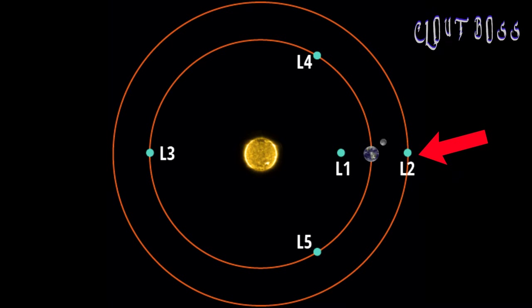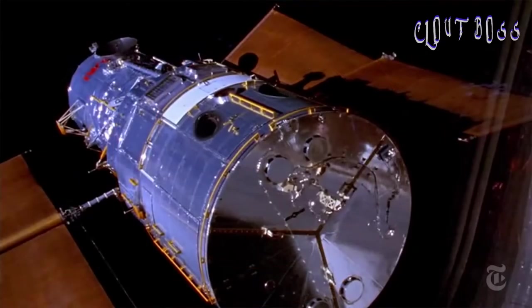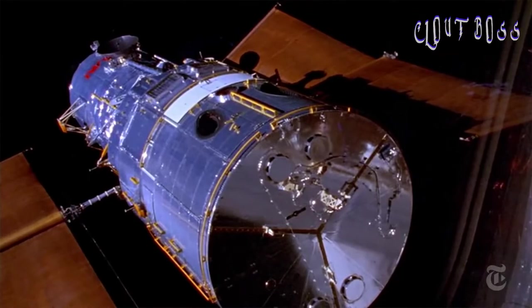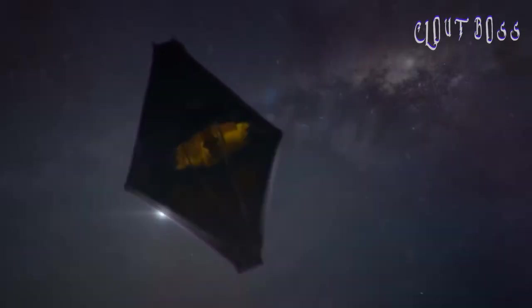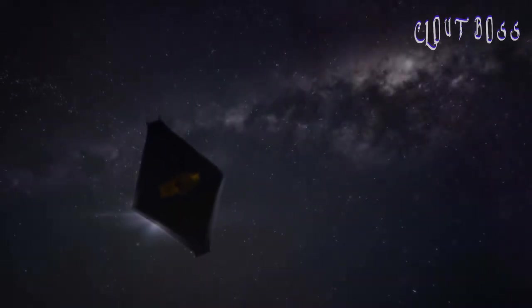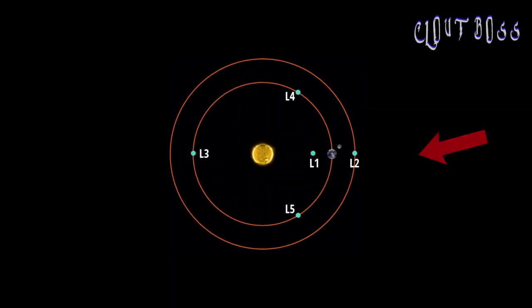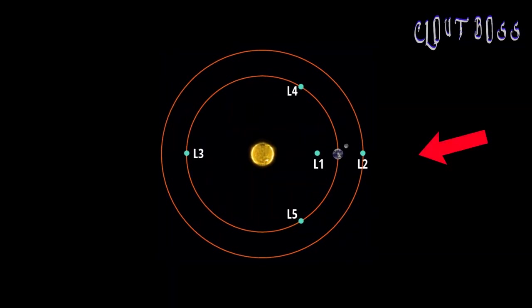However, it also means it is too far away to be easily repaired if something goes wrong. It is much further from the Earth than the Hubble Space Telescope. The sun and the Earth's gravitational pull will stop the telescope from moving around too much. Only small and frequent rocket thrusts are needed to maintain its orbit at L2.